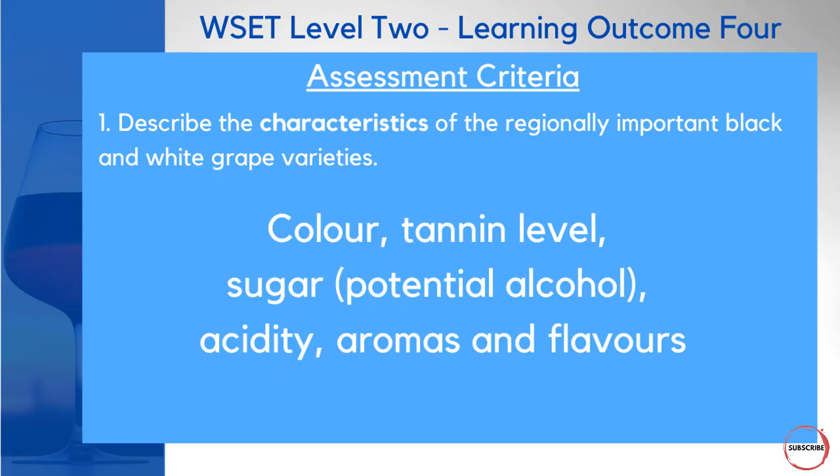It's very similar in structure compared to learning outcome 3, where we looked at the principal grape varieties, but now we're going through quite a few more. Let's jump into assessment criteria number 1 and look at the characteristics of those regionally important grapes — colour, tannin level, sugar and therefore potential alcohol content, acidity, aromas, and flavours.